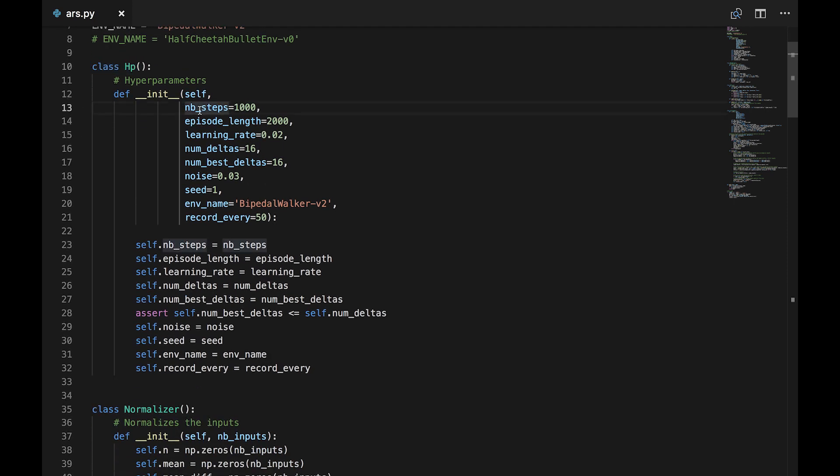NB steps is how many full training steps we'll run. Episode length is the maximum number of steps in an episode. Learning rate is how much we update the weights each iteration. Num deltas is the number of variations of random noise we generate each training step.